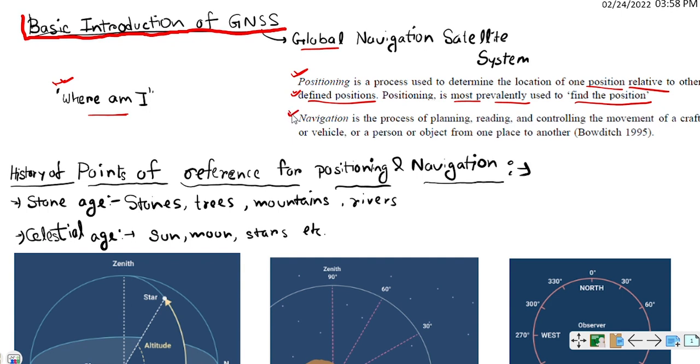And what is navigation? Navigation is the process of planning, reading, and controlling the movement of an aircraft or vehicle or a person. If you want to move from position A to position B, how will you navigate? That is related to this navigation.